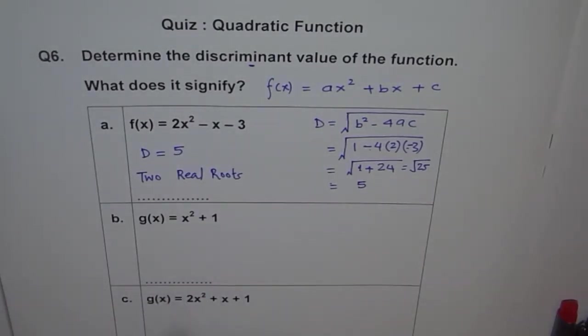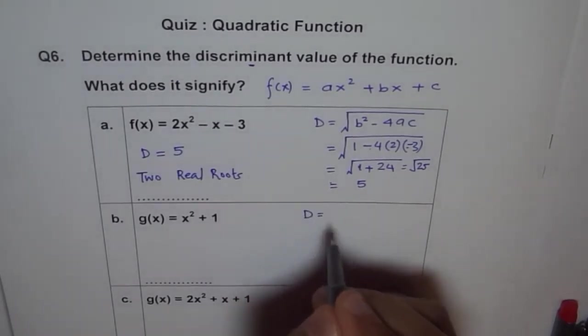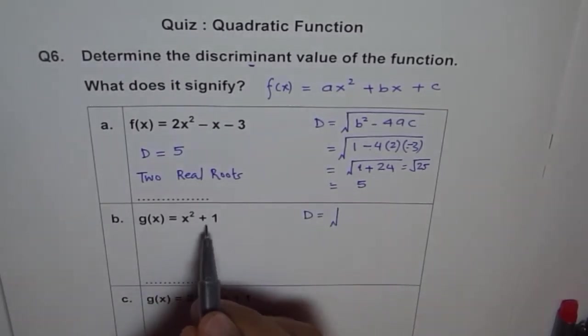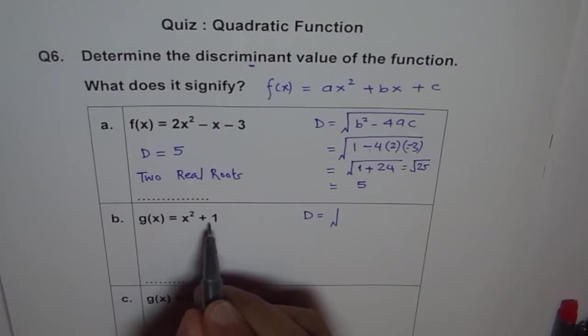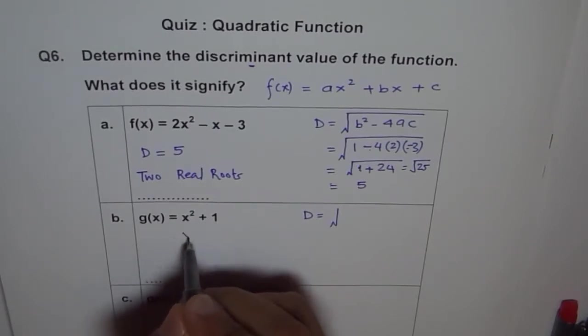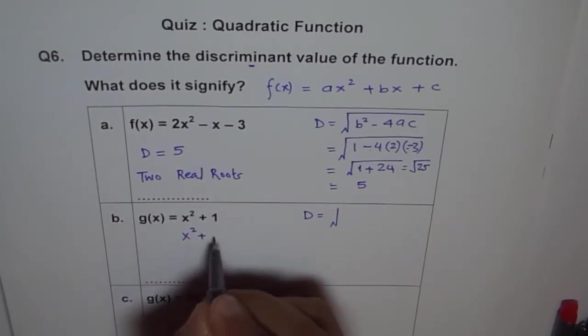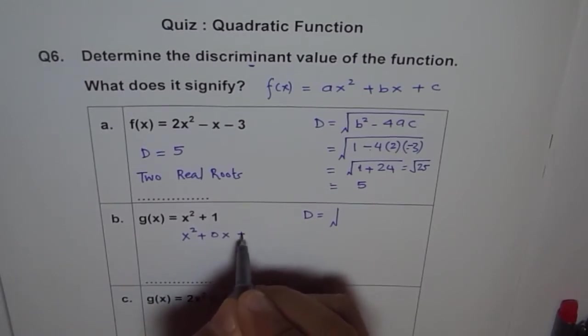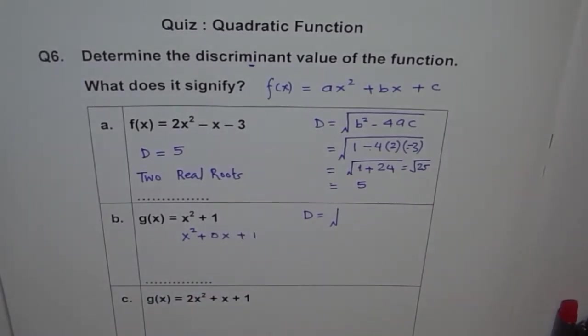How about the next one? For part B, what is b? b = 0 since there is no x term. You could think of this function as x² + 0x + 1, so b is 0.